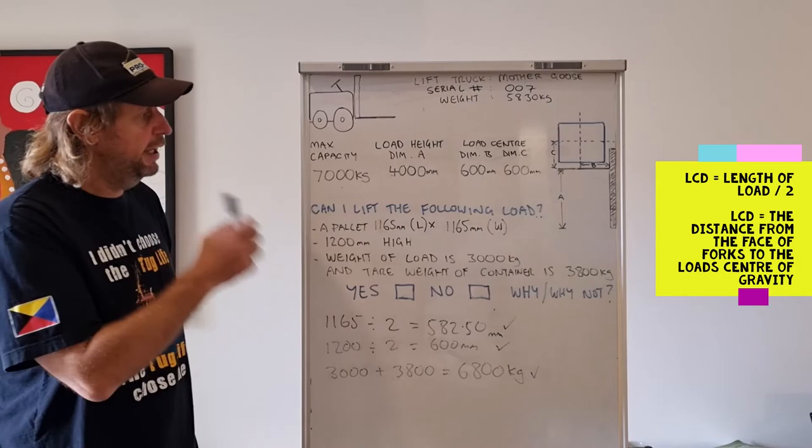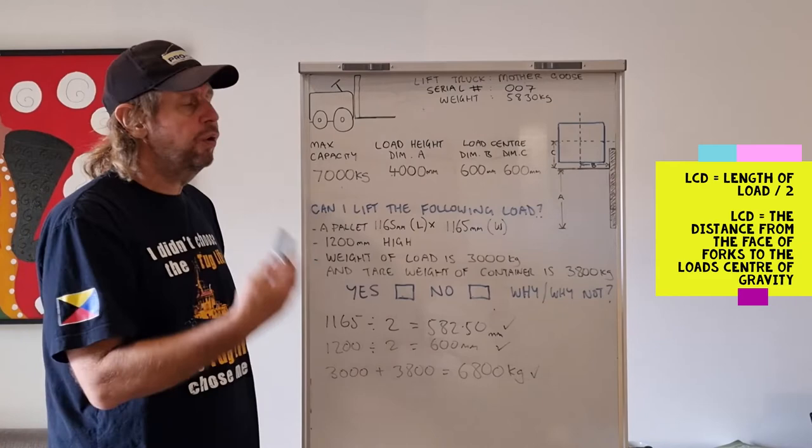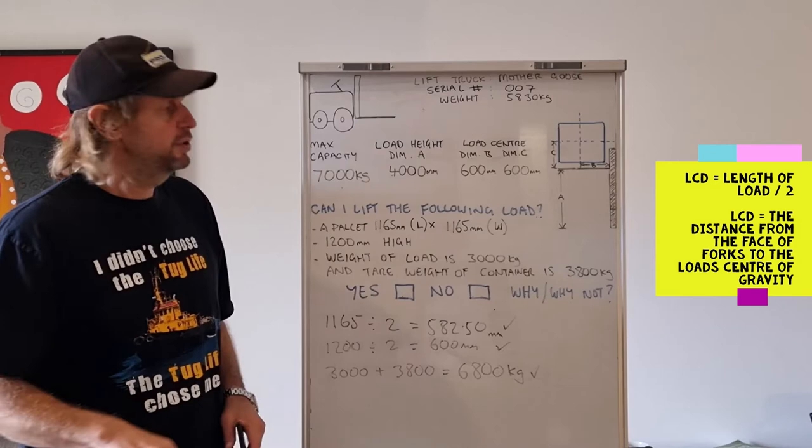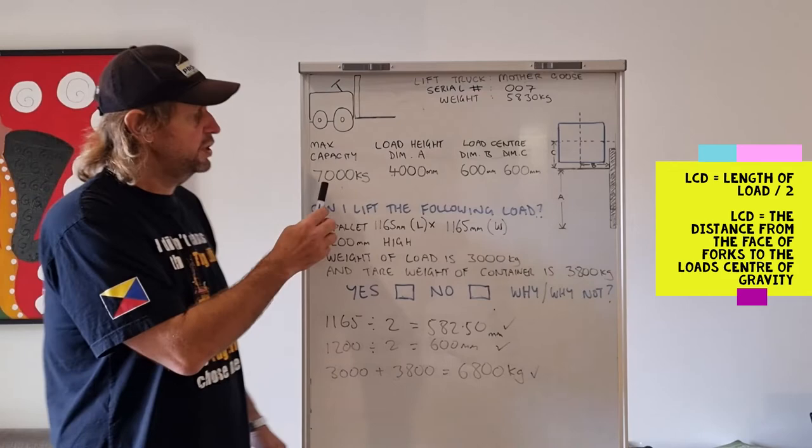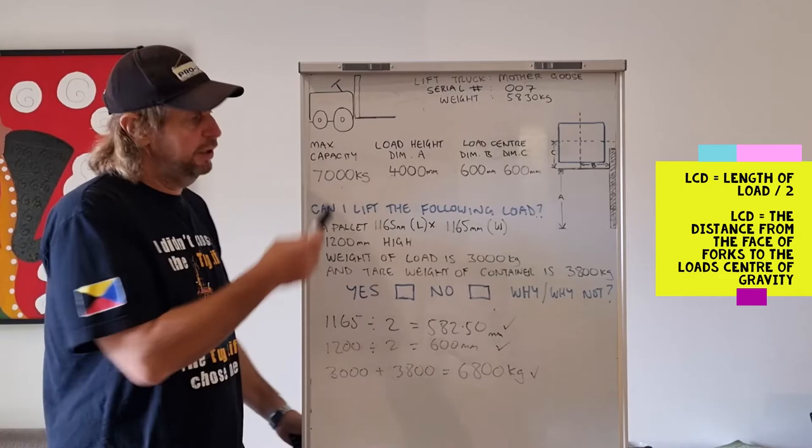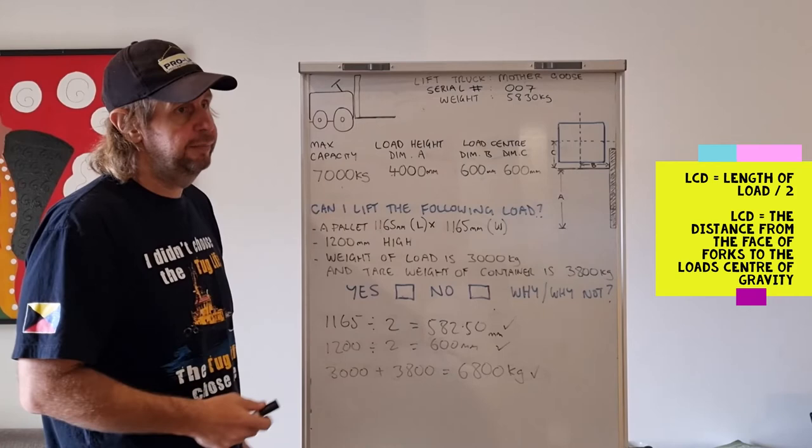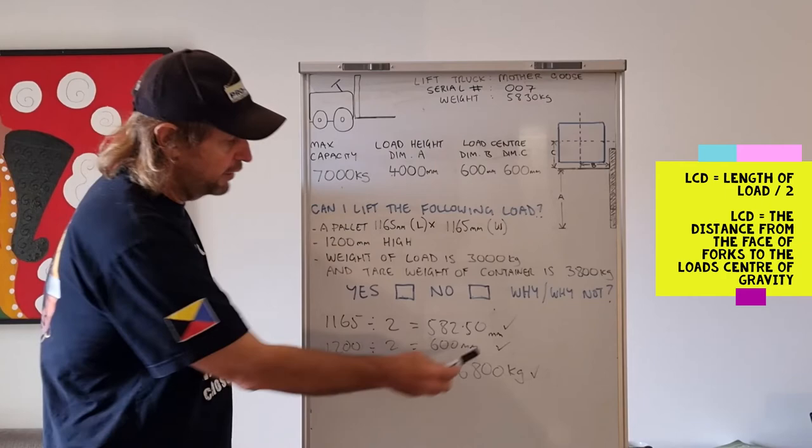These load center distances are not always 600 millimeters. Sometimes they can be 900, depending on the attachments you use on your forklift. And they may be less. Also, the maximum capacity will change. So, for obvious reasons, we're not giving you the exam questions, either here or in your student activity books. You will have to practice and get different examples and keep writing them out.